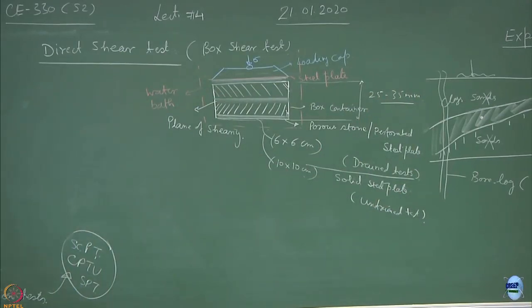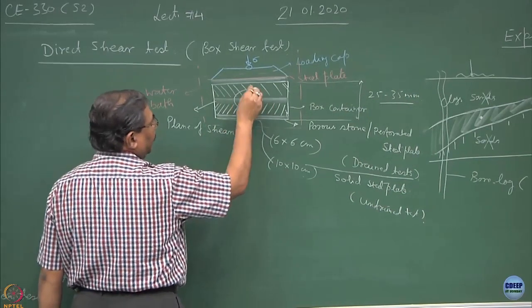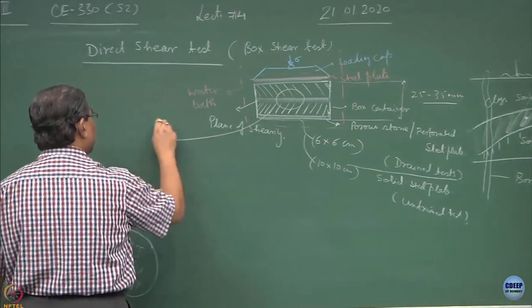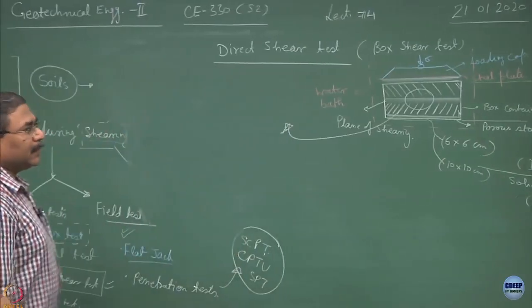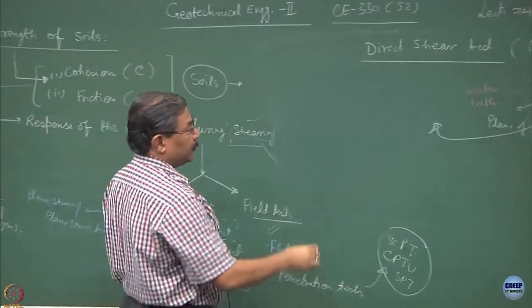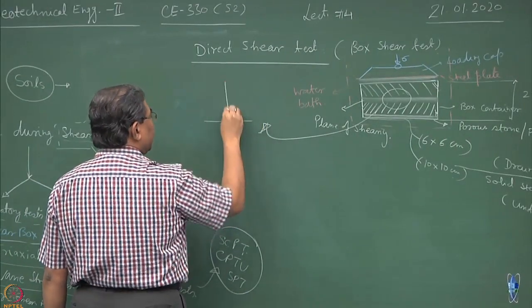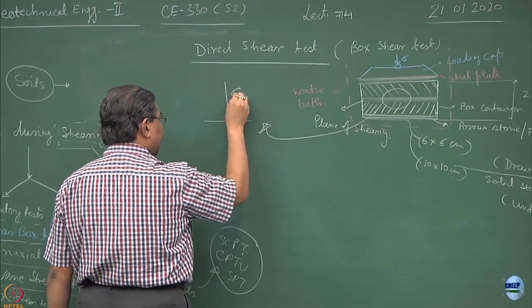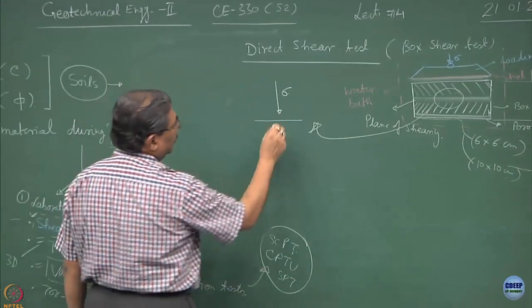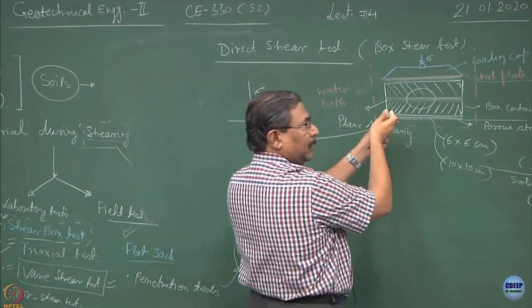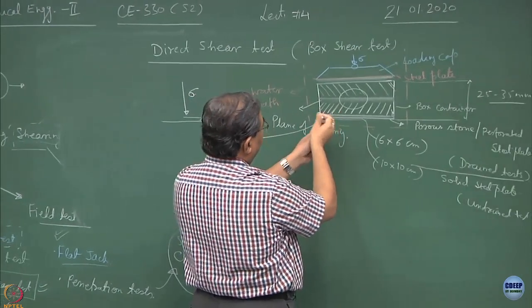Now if I take an element somewhere here and if I zoom it, what I am interested in is, I am interested in finding out what is the state of stress here. This is the plane at which sigma is acting and then there is a shear stress which might act once I have mounted it on the direct shear box assembly and if I shear it.